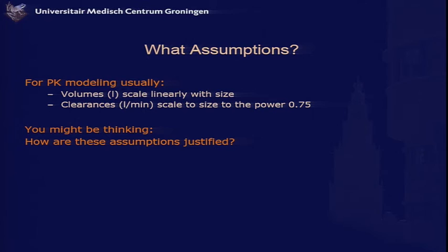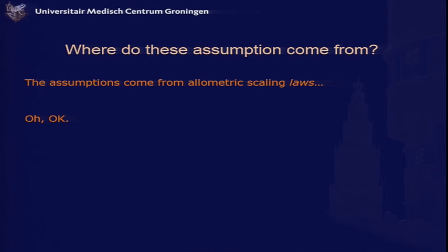What are these assumptions, and how will you recognize them? The assumptions made in the PK world are that volumes scale linearly with size, and clearances in volumes per minute scale to the power 0.75, the three-quarter power. You might be thinking: where do these assumptions come from? The response is: they come from allometric scaling laws.